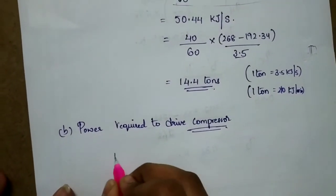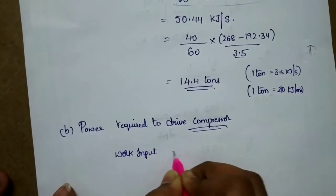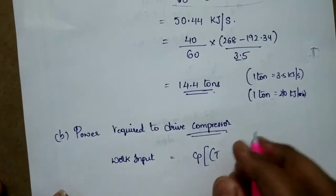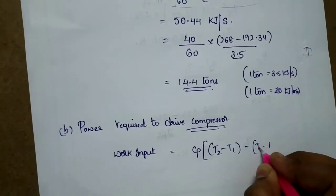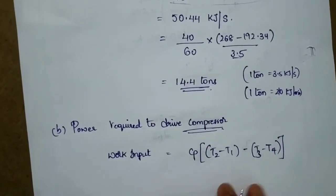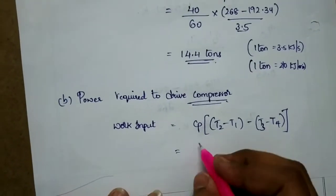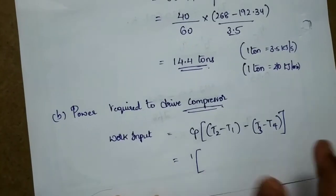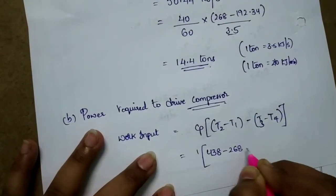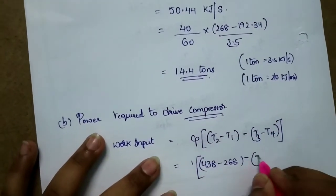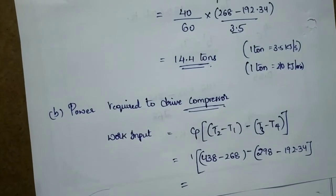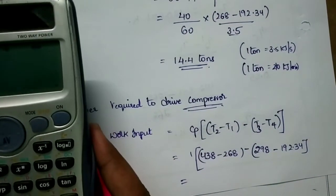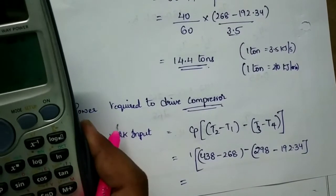Work input is equal to Cp times T2 minus T1 minus T3 minus T4. That is heat rejected minus heat supplied. So 1 into T2, which is 438, minus 268, minus T3 which is 298, minus 192.34. That equals 64.34 kilojoules per kg of air.